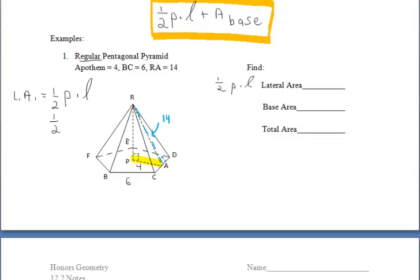To find the lateral area, we do one half of the perimeter of our base, which is 30 — since one side is 6 and there are five sides total — times the slant height of 14. So we do one half of 30 times 14, which gives us 210 units squared.